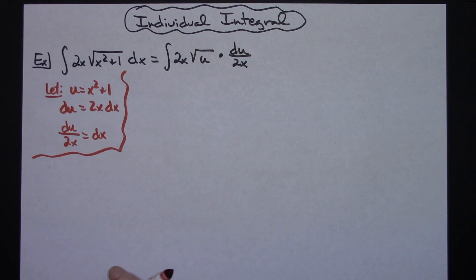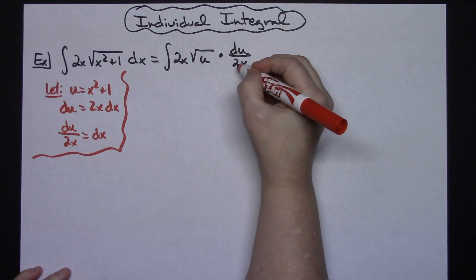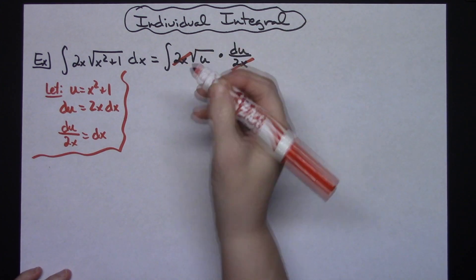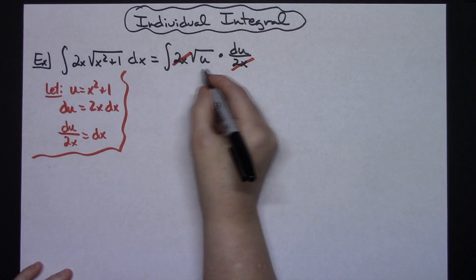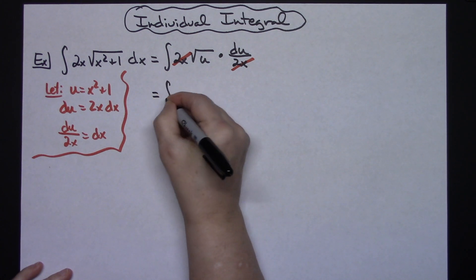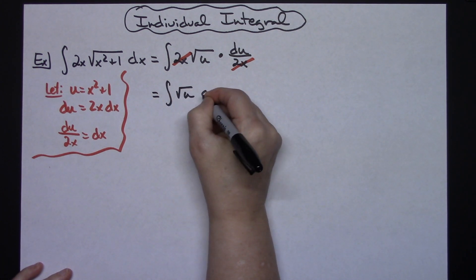Alright, now at this point as long as you can get your x's to fall out you're in good shape. I have a 2x on the bottom, I have a 2x on the top. That's going to leave me with the integral of the square root of u du.